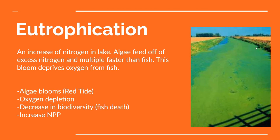Here we can see a good example of eutrophication. Farmers were probably over-fertilizing their fields, and the nitrogen in the fertilizer was getting into the water supply, causing an algae bloom. Sometimes we see it in the ocean — there are types of algae that turn red, called the red tide. The bottom line is that you have a decrease in biodiversity because the fish die from lack of oxygen, while primary production increases massively — a huge increase in NPP.